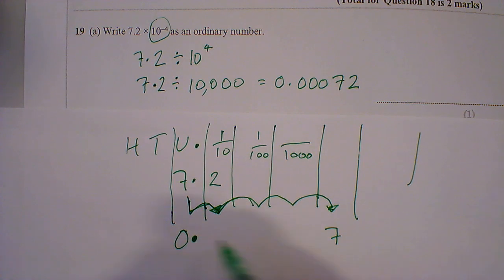Your decimal point stays as it is, the empty spaces become 0, so 0.0007, and then we add the 2 at the end. And you can see the answers match. So that's a second method.